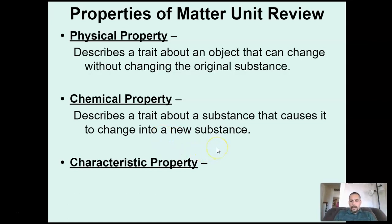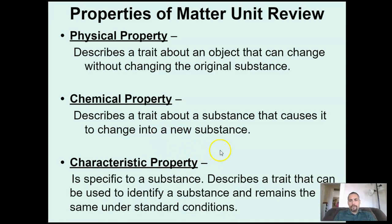And then the other one, the last one here, which is kind of an important one for us to be thinking about and remembering is the idea of a characteristic property. And a characteristic property is one that is specific to a substance. In other words, it can be used to identify the substance and it remains the same under standard conditions.